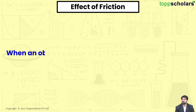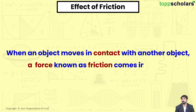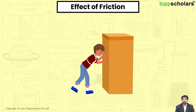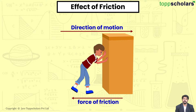When an object moves in contact with another object, a force known as friction comes into play. The force of friction always acts on all objects and its direction is always opposite to the direction of motion.